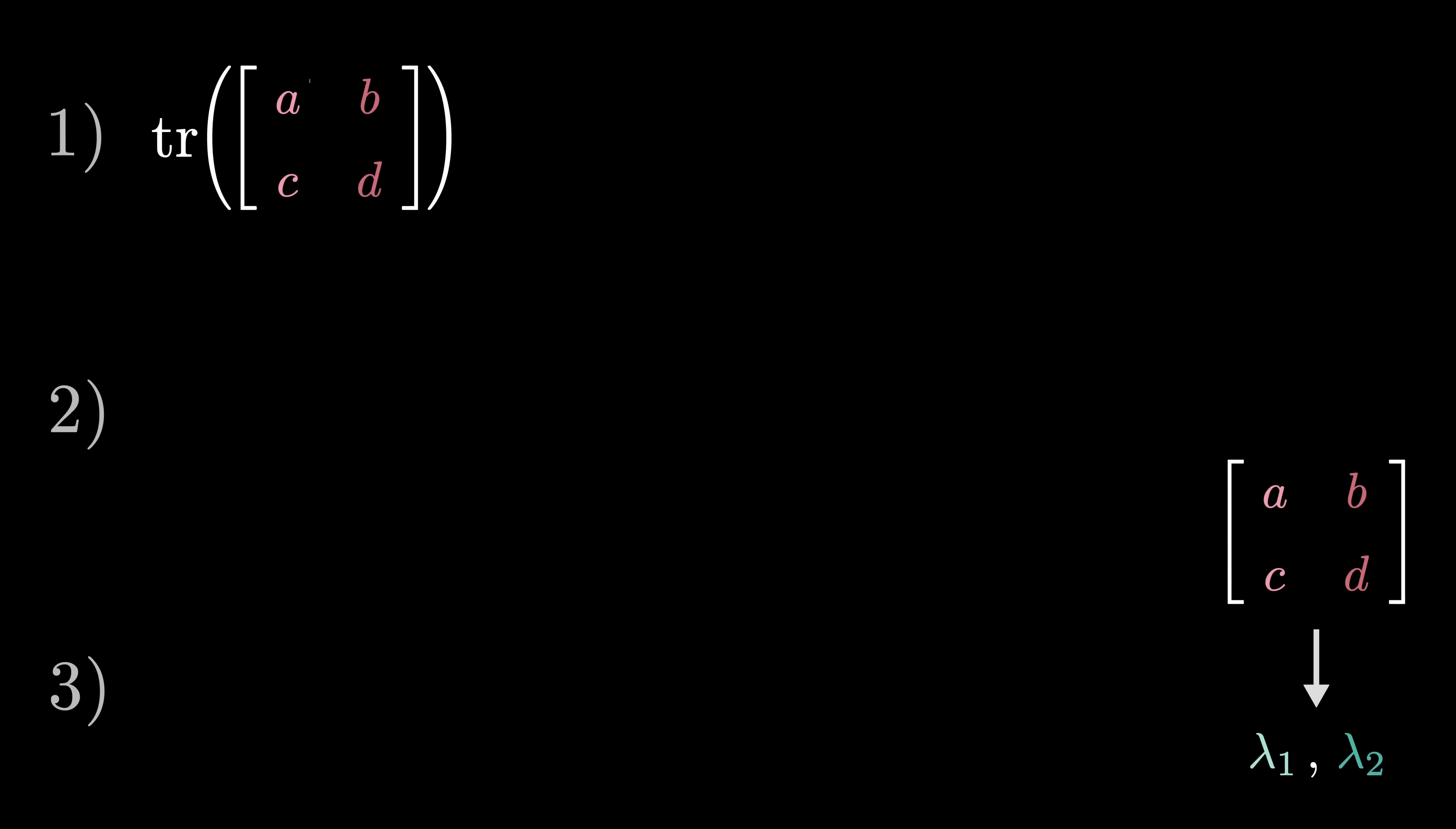Number one, the trace of a matrix, which is the sum of these two diagonal entries, is equal to the sum of the eigenvalues. Or another way to phrase it, more useful for our purposes, is that the mean of the two eigenvalues is the same as the mean of these two diagonal entries.